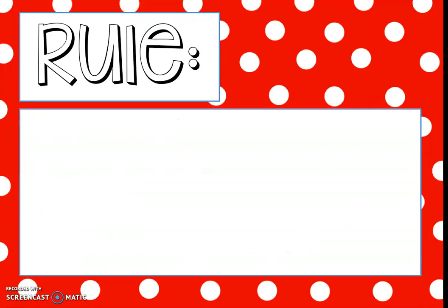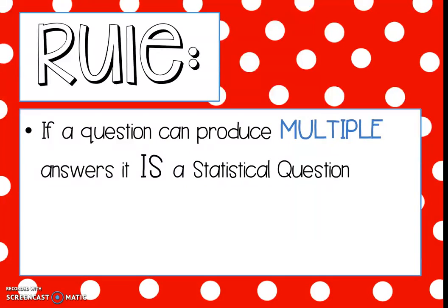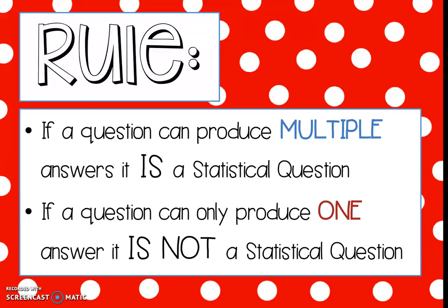In class today we came up with a rule to determine if a question is statistical or non-statistical. That rule is: if the question can produce multiple answers or a variety of answers, then it is statistical. If the question only produces one answer, then it's not statistical. Use that rule on your homework — read each question and determine does it have multiple answers or only one answer, then label it statistical or non-statistical.